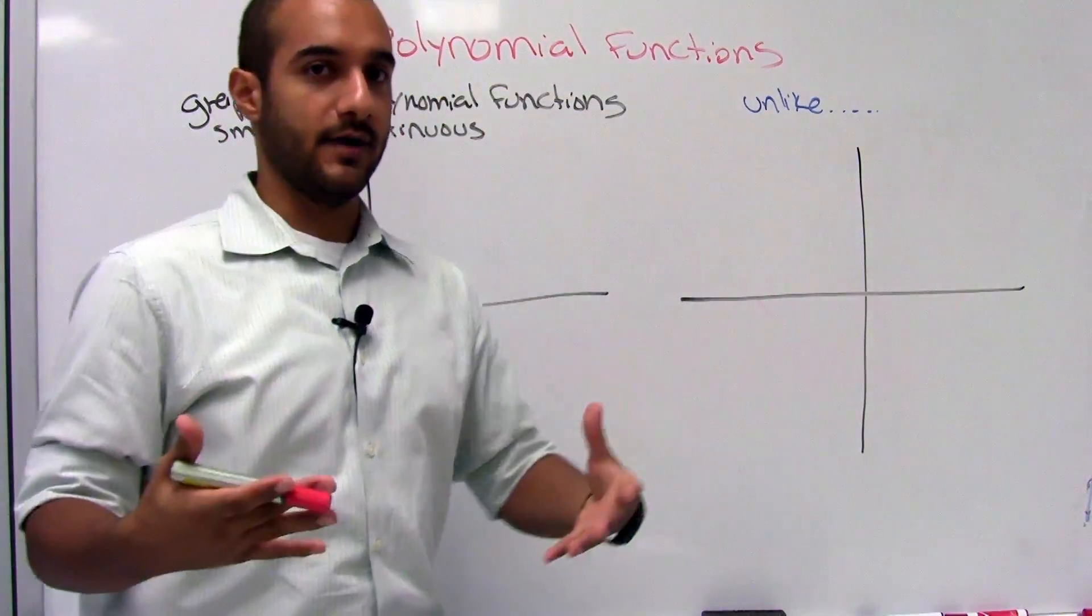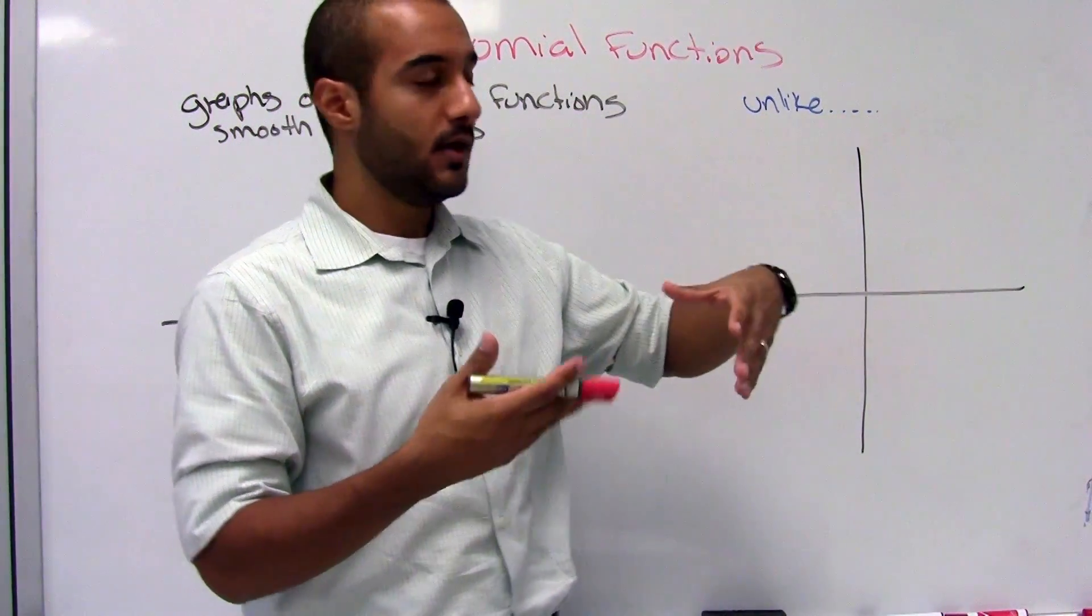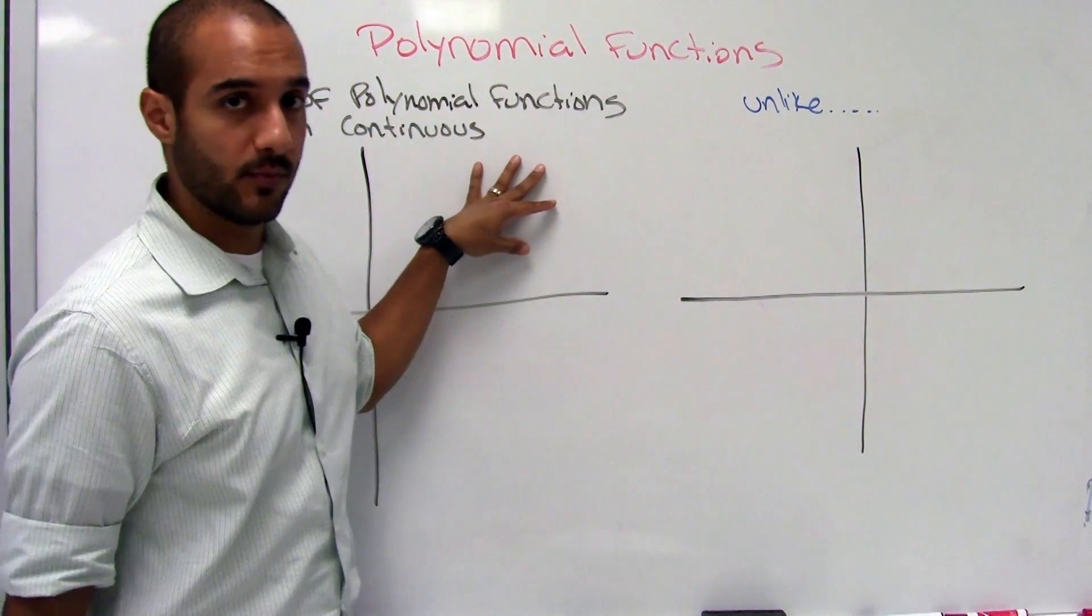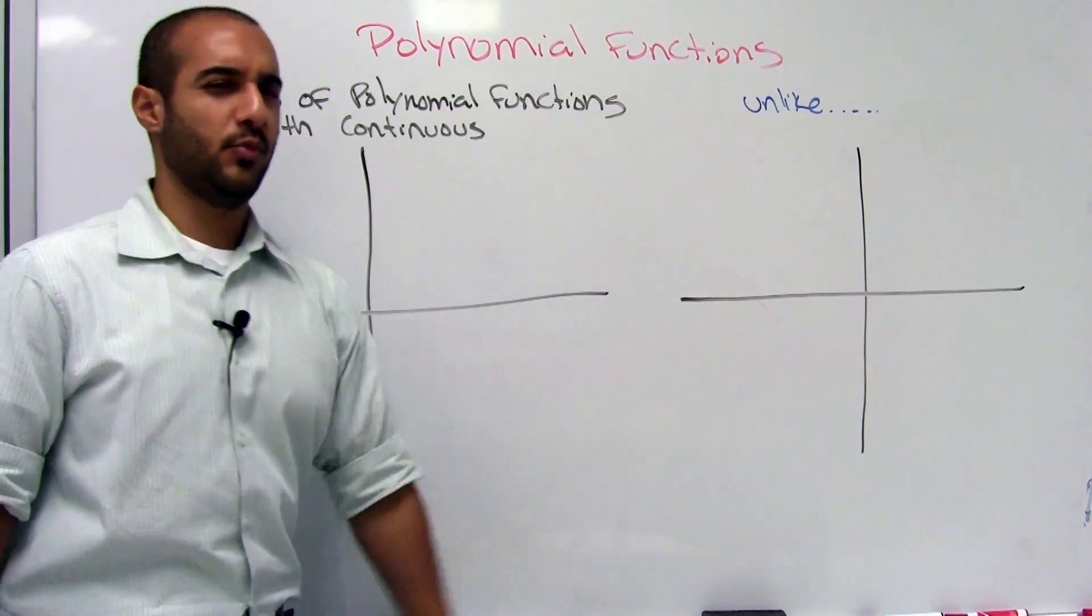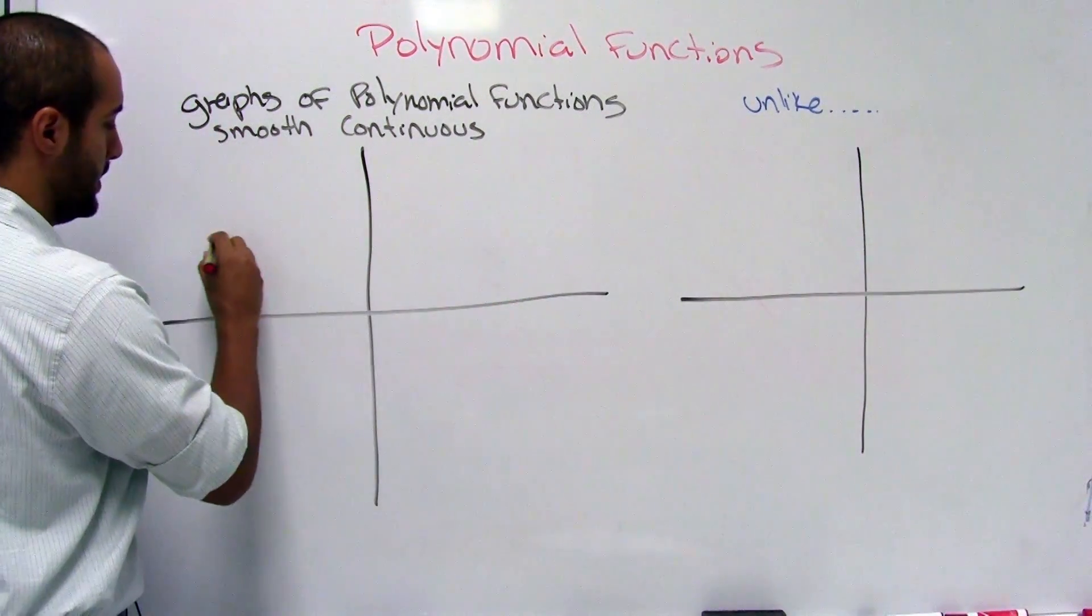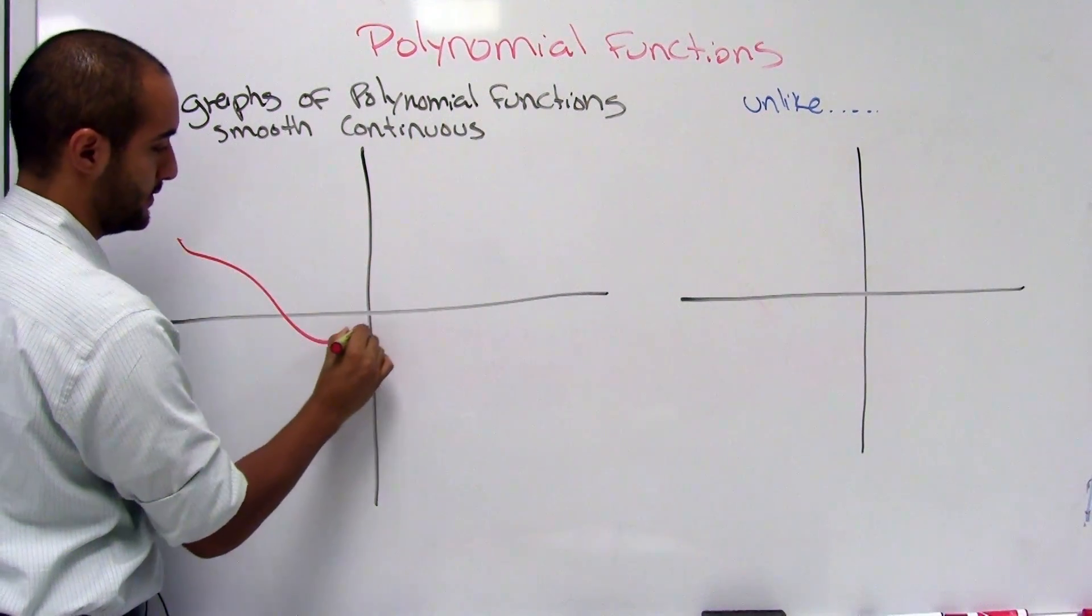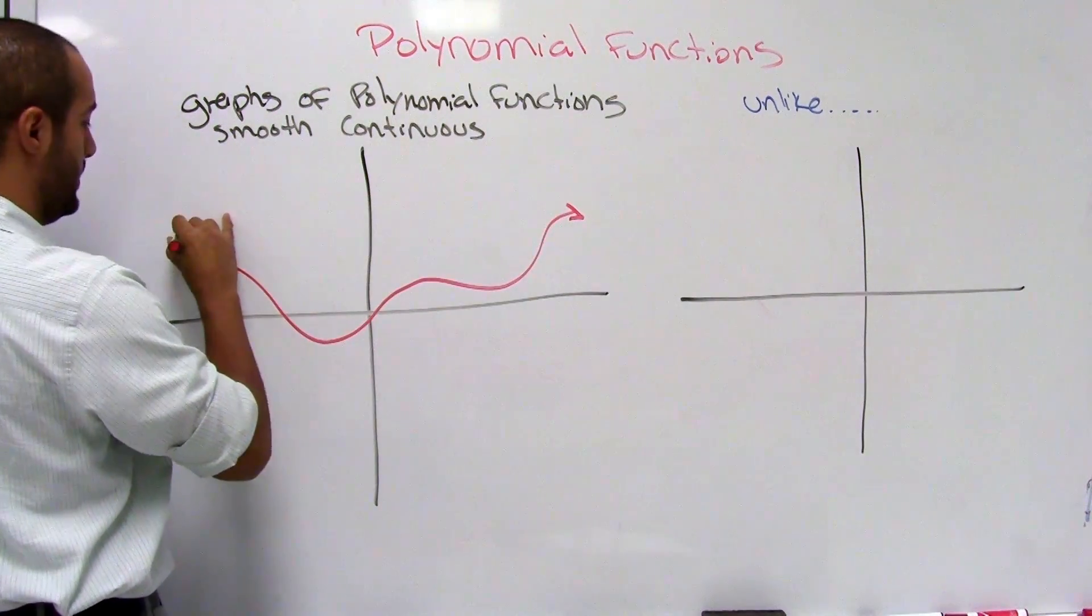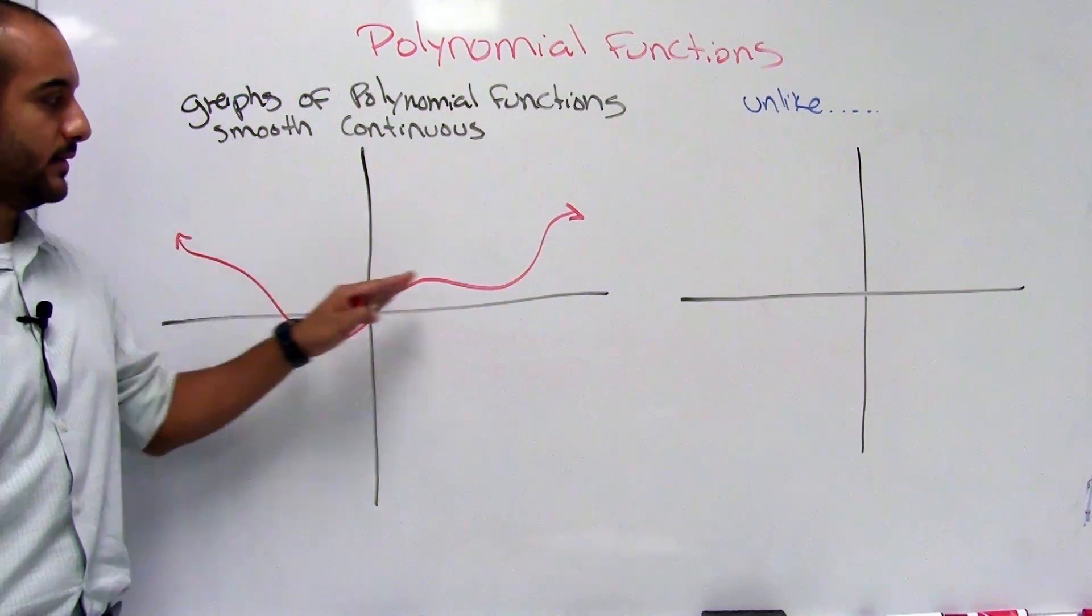Alright, what if they just give you graphs though? And they say, is this graph from a polynomial function? Well, let's look at what the graphs for all the polynomial functions should look like. They should all be smooth and continuous. They might not be the prettiest of things, but they kind of smooth it out. So something could look like this. So I would say that yeah, this looks pretty smooth and it continues.